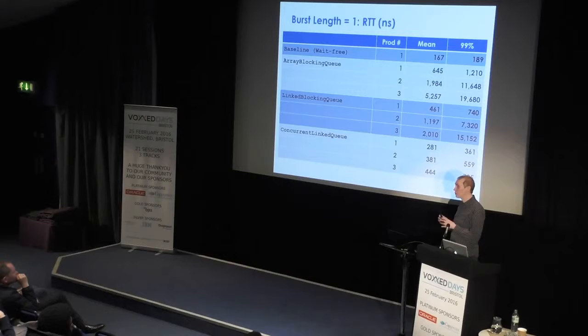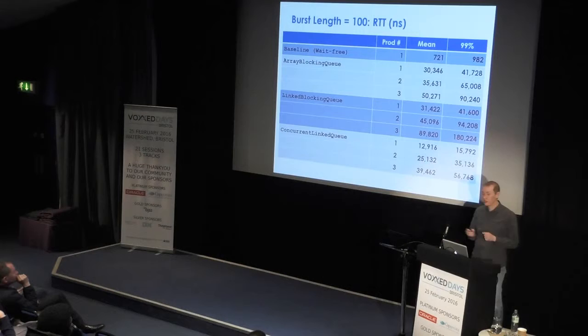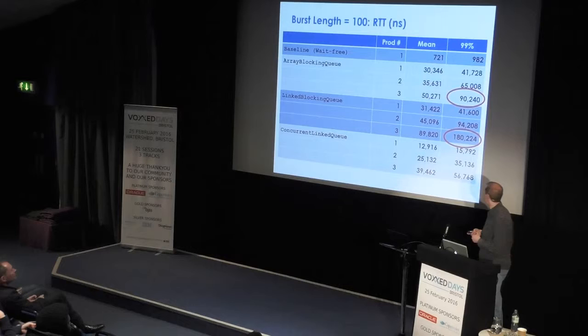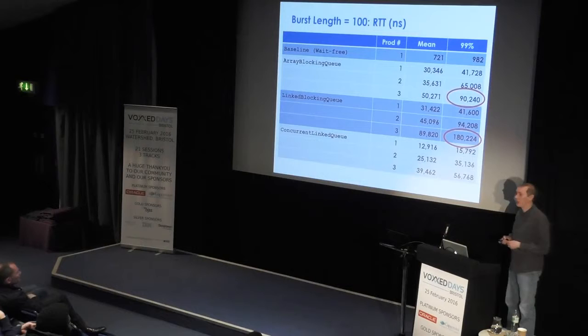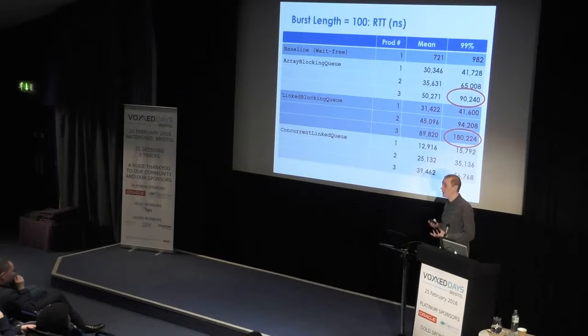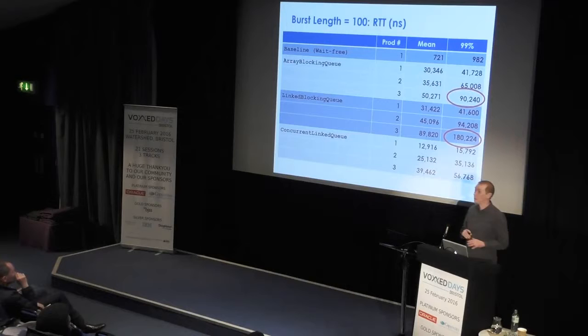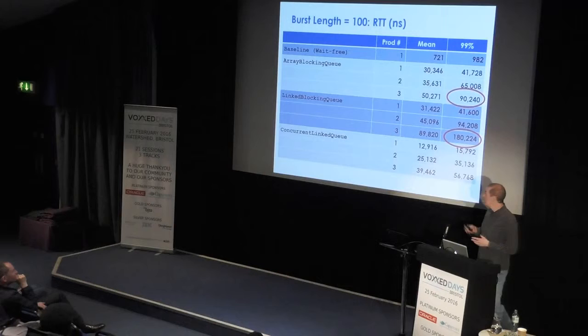In the real world you tend to burst — you get a burst of messages in and have to handle them and respond. So in this case I'm bursting in with 100 messages, trying to deal with them as quickly as possible as they contend on the queue. Look at the 99th percentile for ArrayBlockingQueue and LinkedBlockingQueue — we're looking at 90 to 180 microseconds. That's like many trips across the data center, just to send between two threads in the same process. It's a lot better when you go down to ConcurrentLinkedQueue, which uses lock-free techniques.